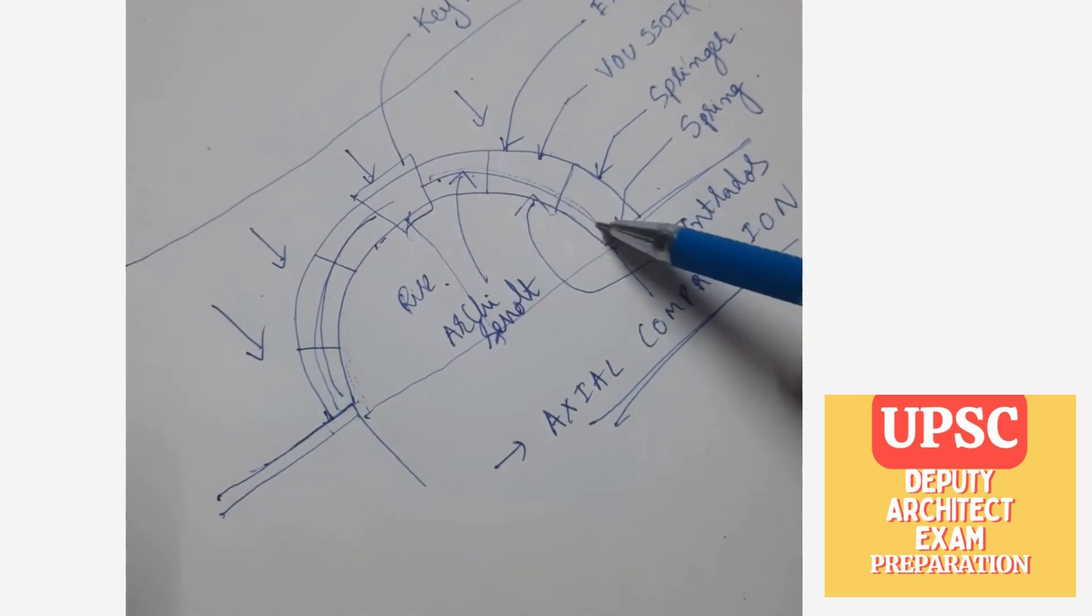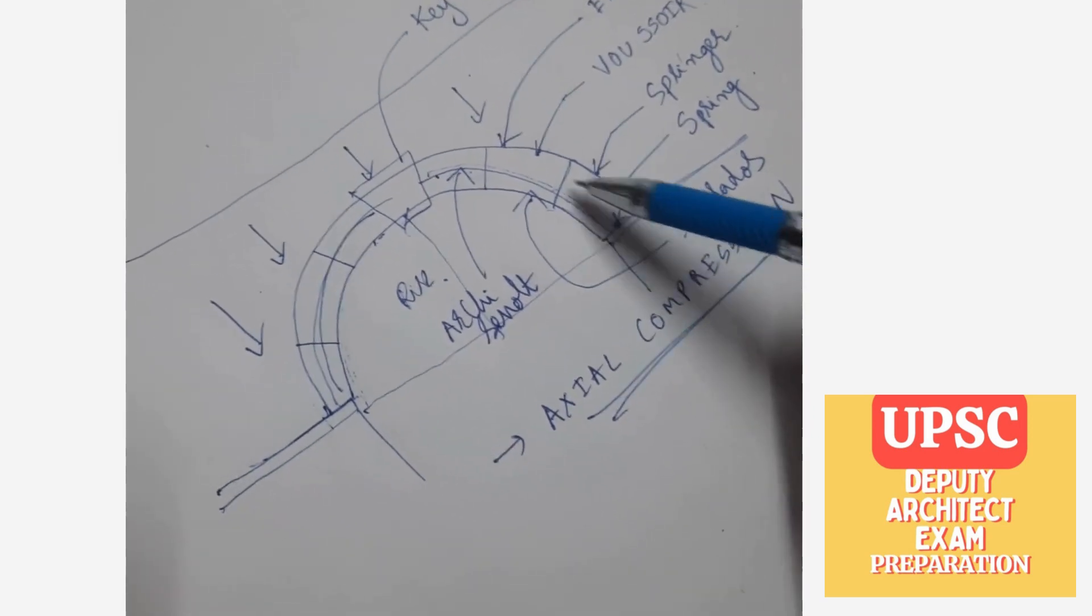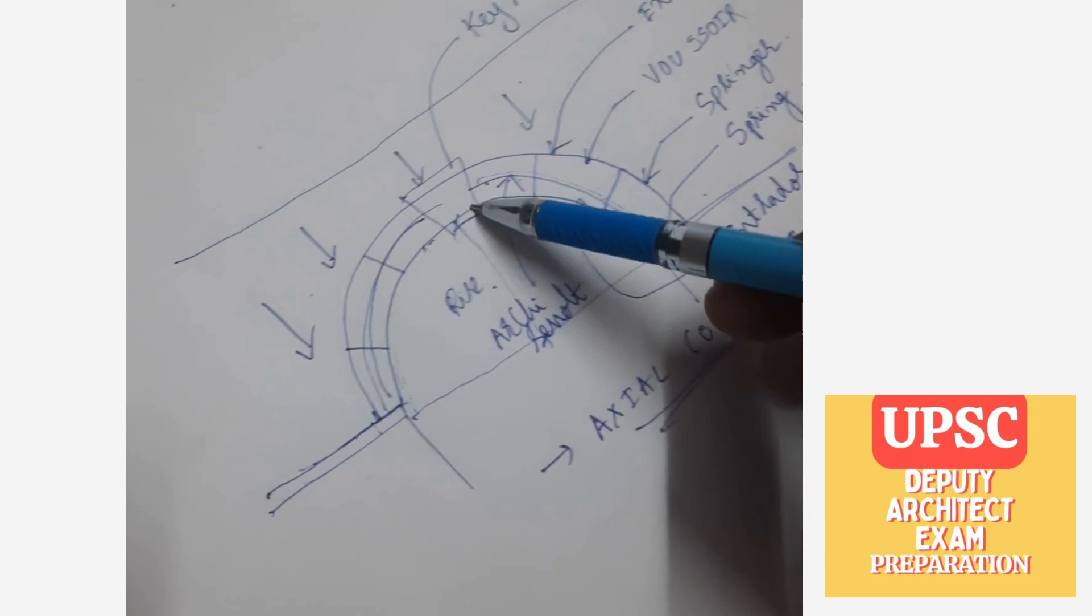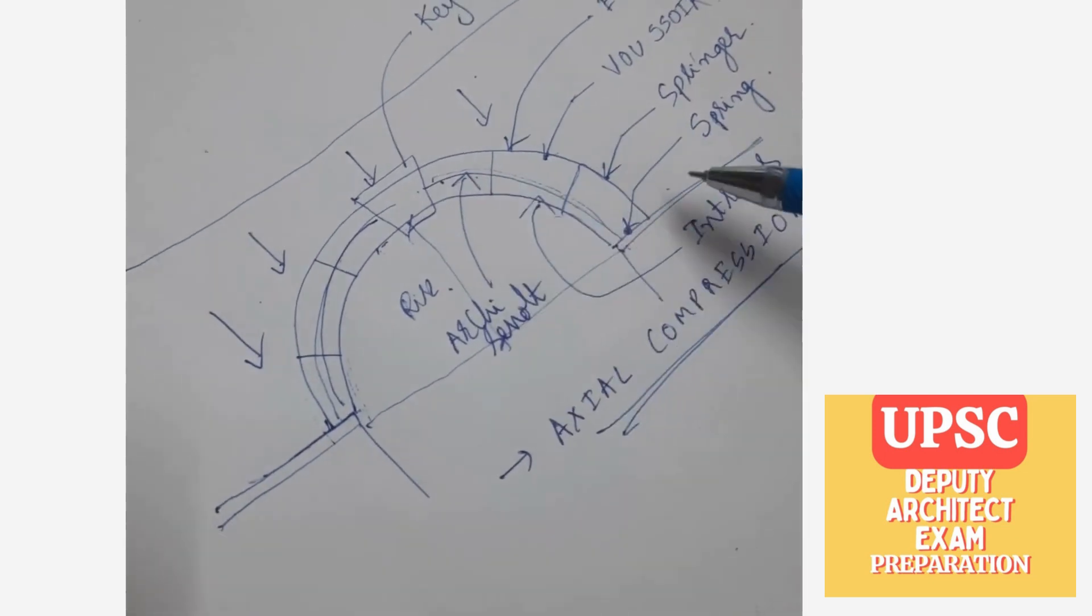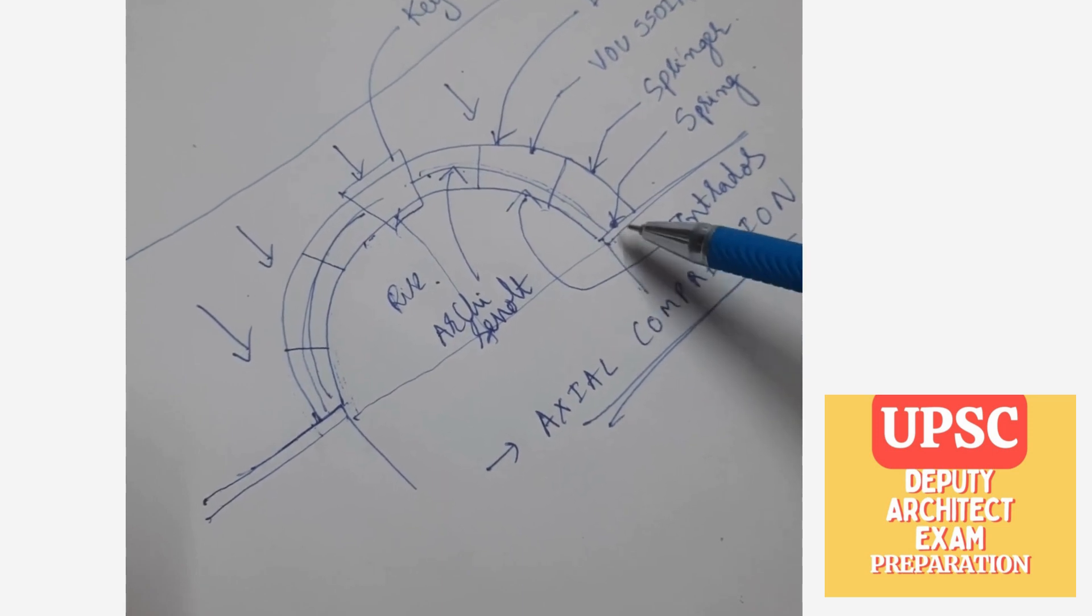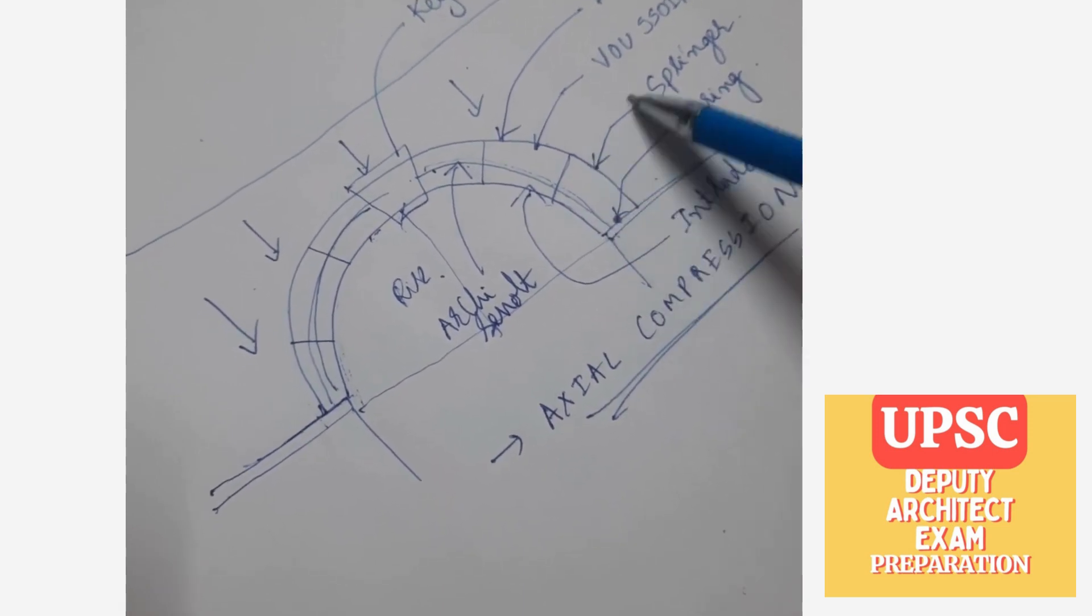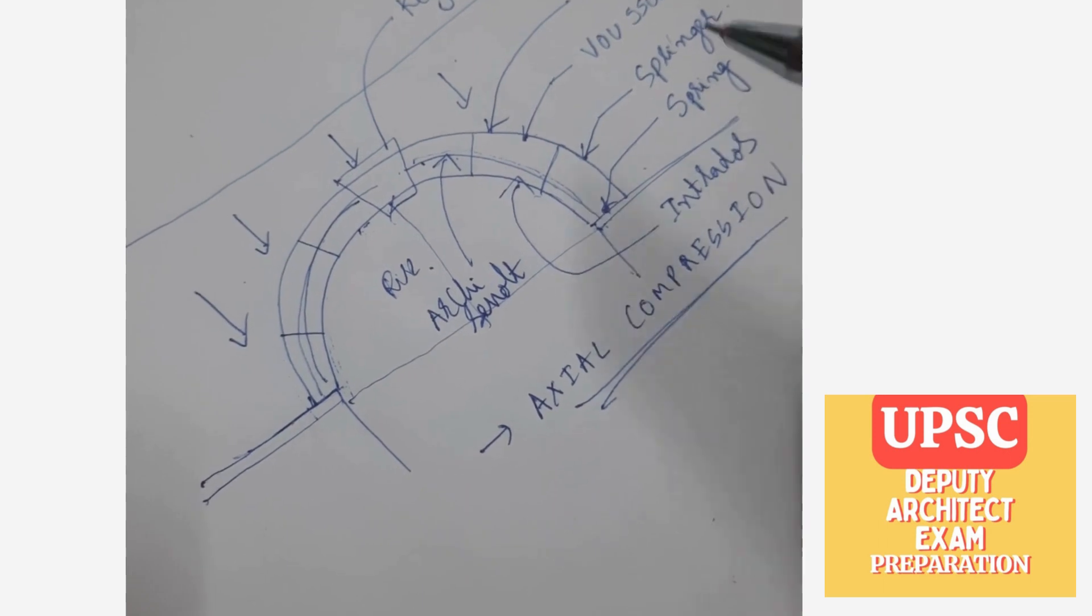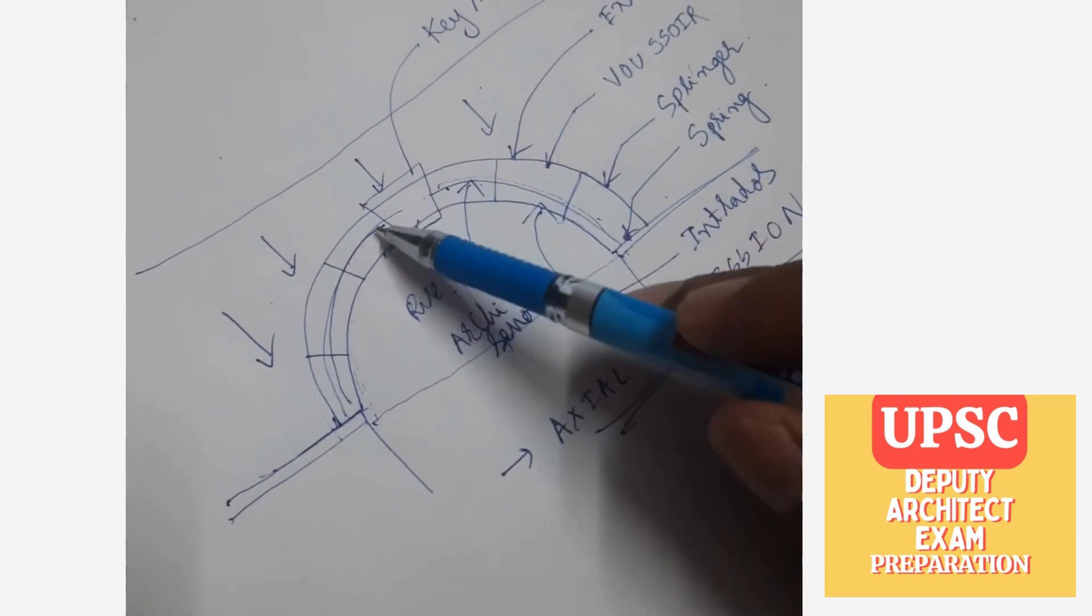The last wedge which is resting on the impost, that means on the base, is called springer, and the point is called spring. And each wedge is called voussoir.